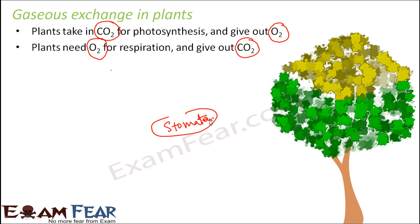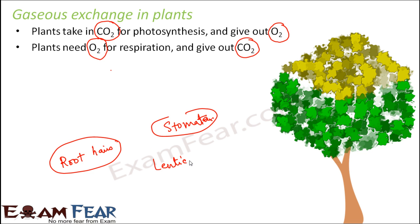Not only stomata — there are also root hairs which are in direct contact with oxygen present in the soil, because soil contains water and water contains dissolved oxygen. Absorption of oxygen can happen through root hairs. In some plants, there are also small pores called lenticels, present on the stems, which help in exchange of gases. So stomata, root hairs, and lenticels are all parts in plants that help in gaseous exchange.